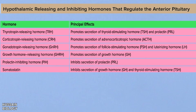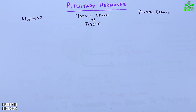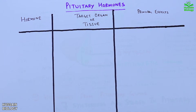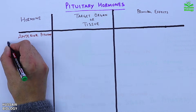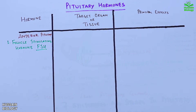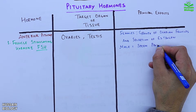These are the hypothalamic releasing and inhibiting hormones that regulate the anterior pituitary. Now let's look at the pituitary hormones one by one and their target organs and principal effects. The follicle stimulating hormone (FSH) targets the ovaries and testes. Its principal effects in females include growth of ovarian follicles and secretion of estrogen, and in males it aids in sperm production.